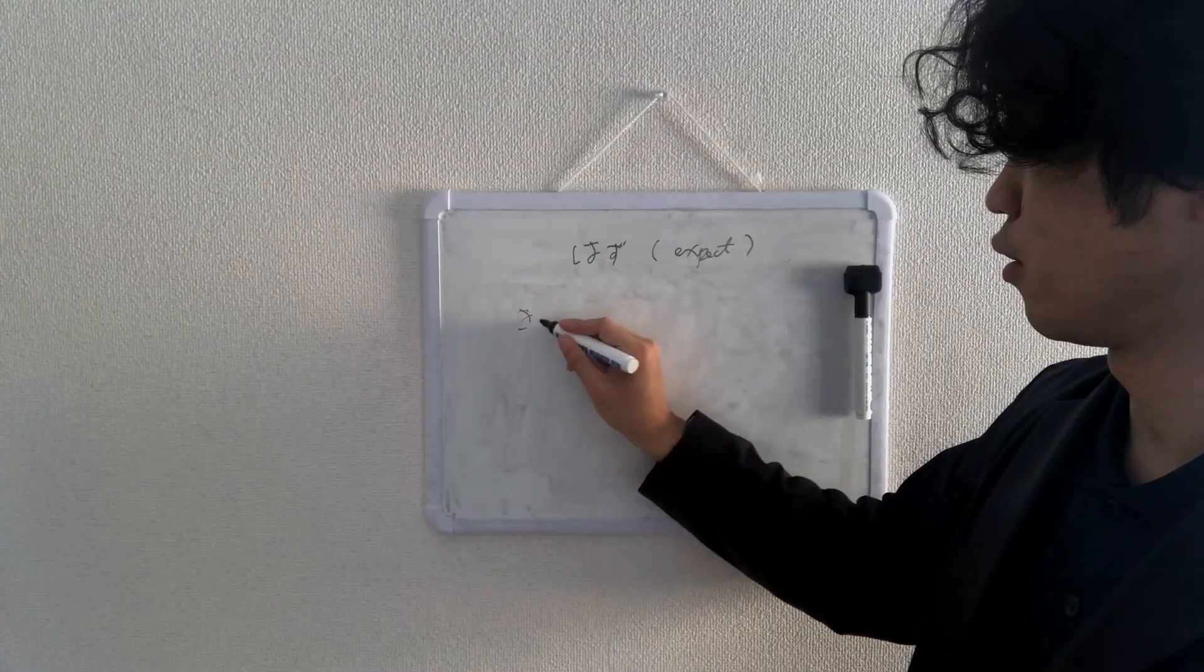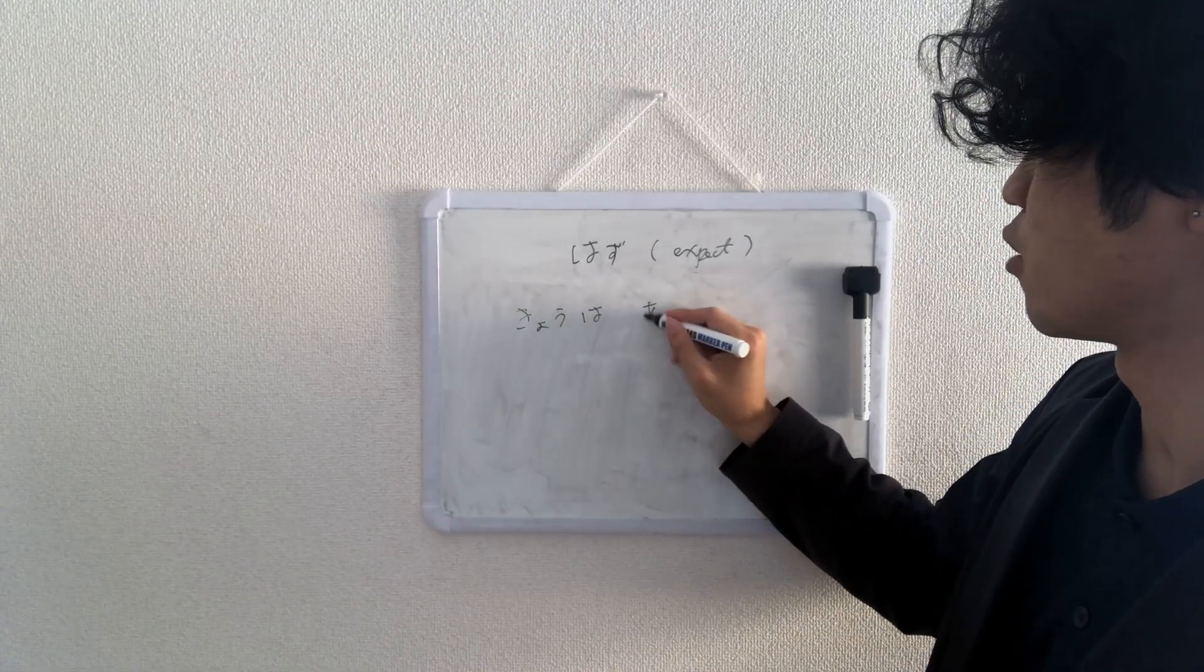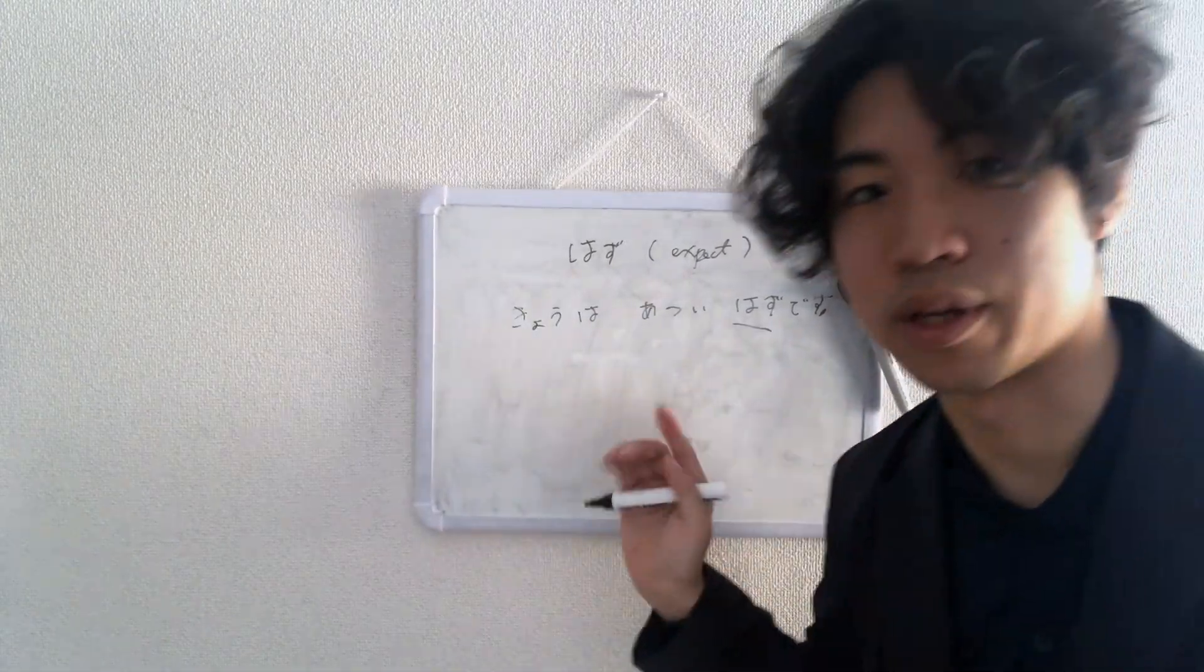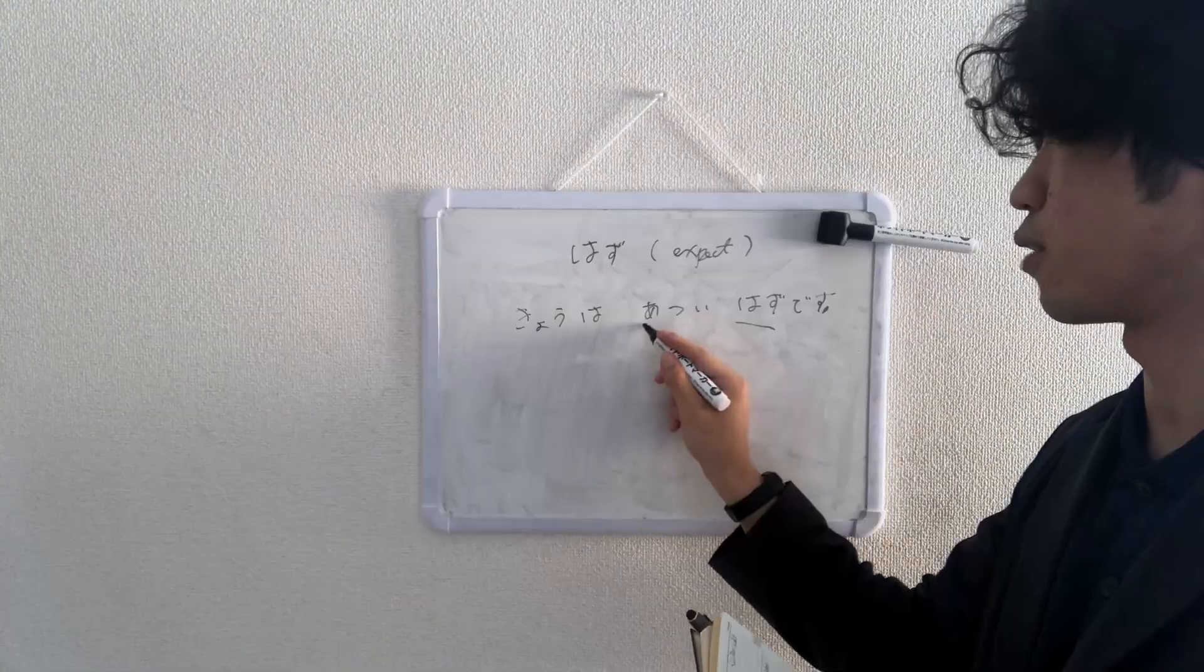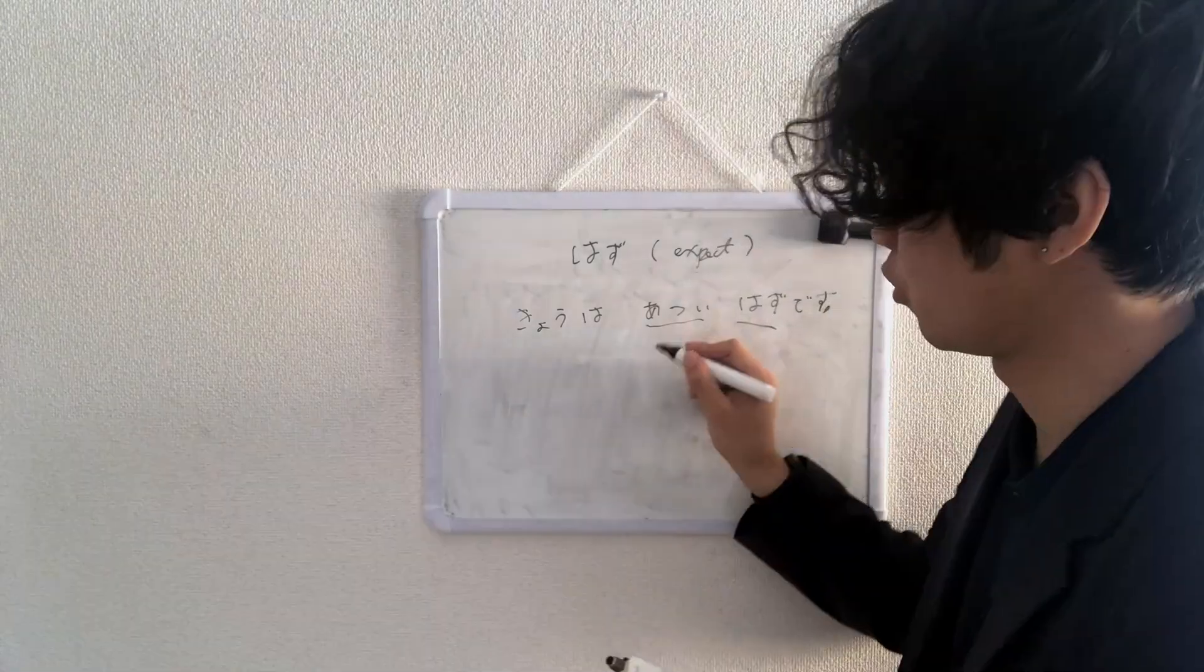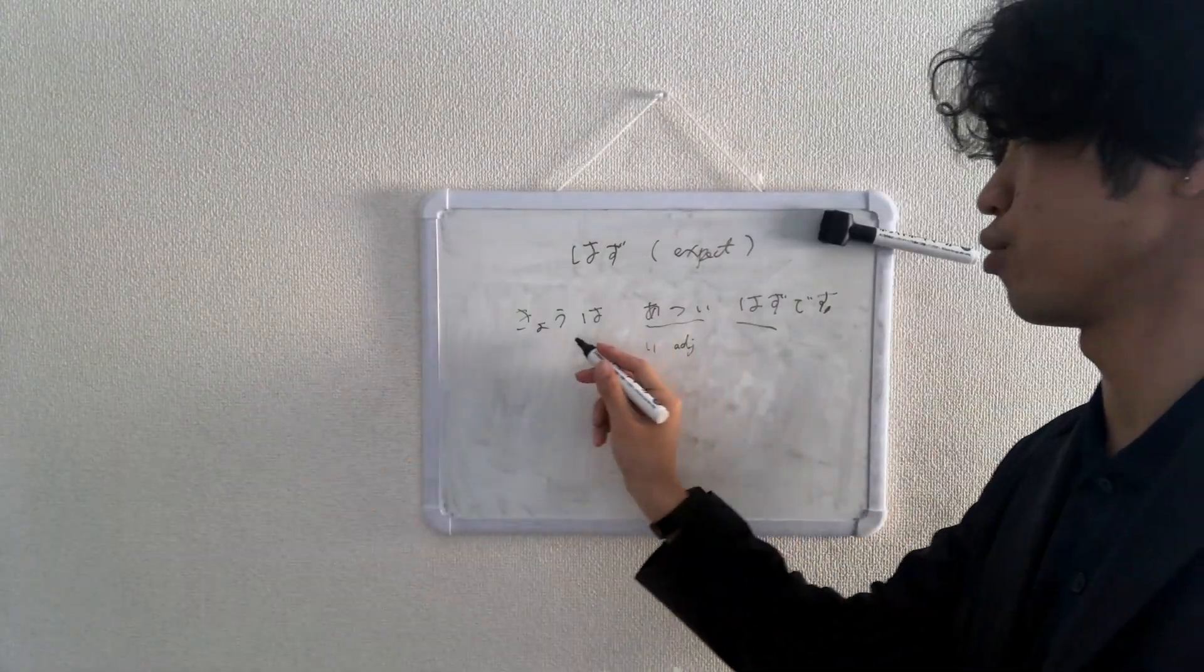今日は暑いはずです. Let's quickly look at はず here. 暑い means hot, い-adjective. 今日は暑いはずです.